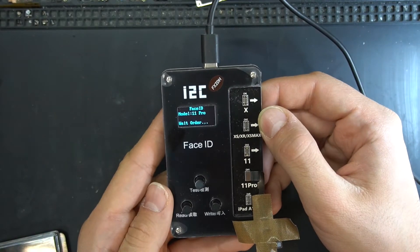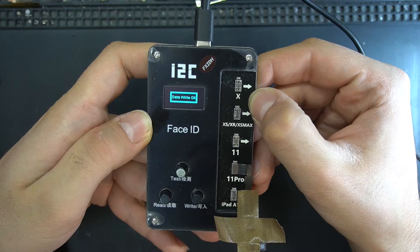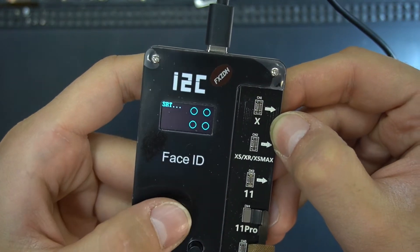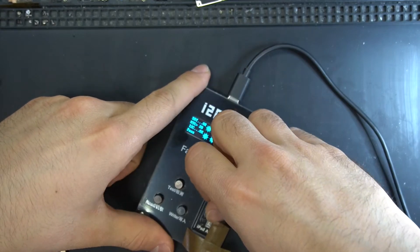Then connect the flex to the programmer and write the data to the new chip and test the work. As you can see, we have our dot projector working.